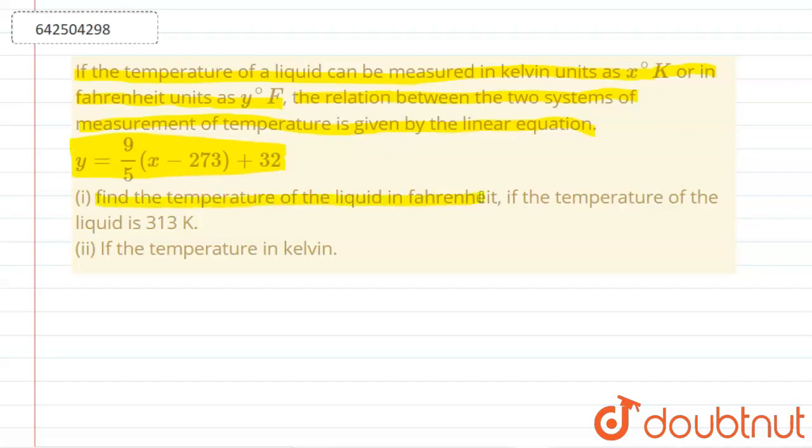We are asked to find out the temperature of the liquid in Fahrenheit if the temperature of the liquid is 313 Kelvin. We are also asked to find out the temperature in Kelvin—that means if the equation is something like that, we are given the values in Fahrenheit, how we can find out the value of the temperature in Kelvin. So first of all, let's find out the value of temperature when the temperature is 313 degree Kelvin.